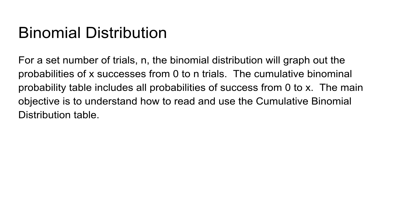In a set of trials, the binomial distribution will graph out the probabilities of success from 0 to n trials, and the cumulative binomial probability table includes all the probabilities of success from 0 to x. The main objective is to be able to understand how to read these tables for the FE exam, and you want to be able to read them quickly since you only have three minutes per problem.